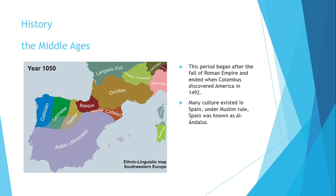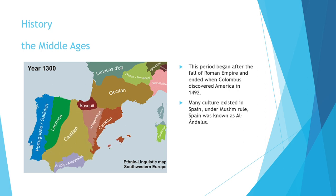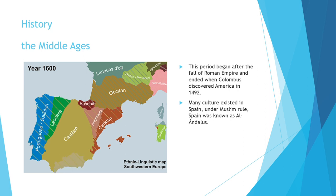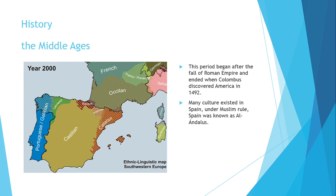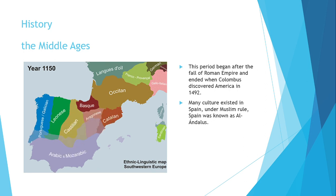The Middle Ages is our next period. This period began after the fall of the Western Roman Empire and ended with the arrival of Columbus in America in 1492. During this period, many cultures existed in Spain. Maybe the most important culture was the Muslim. During the Muslim rule, Spain was called Al-Andalus.